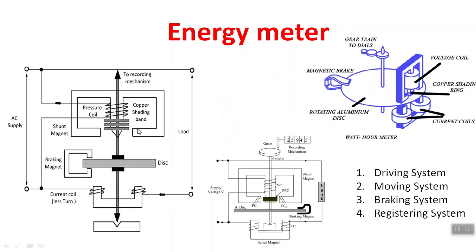The driving system consists of two magnets: an upper magnet and a lower magnet. These are not permanent magnets — they are electromagnets. The upper magnet is also called the pressure coil, and the lower magnet is called the current coil.